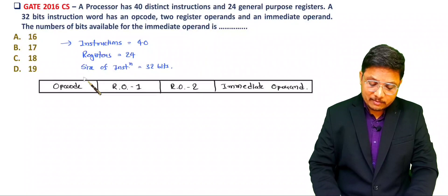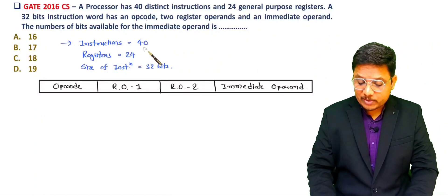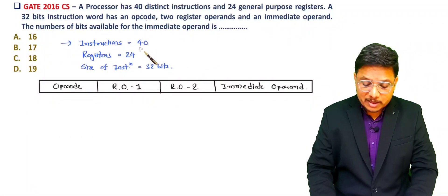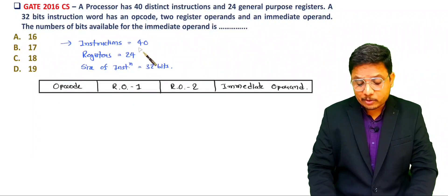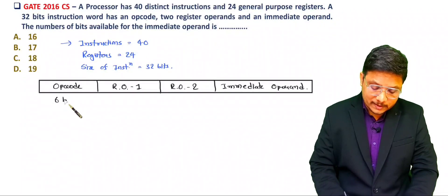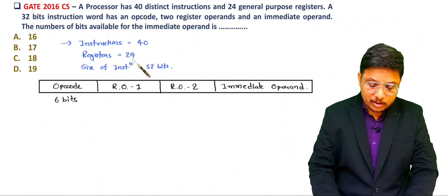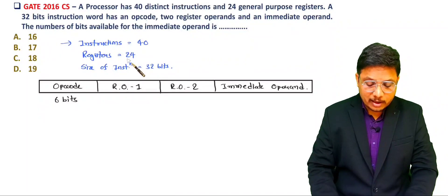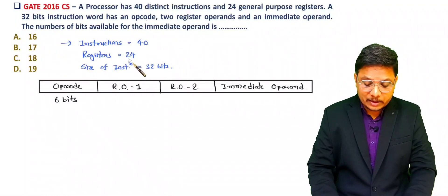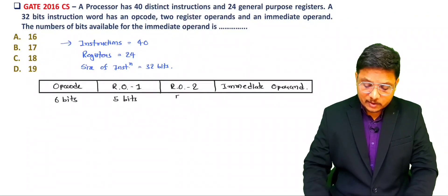Based on the given data we can identify the bit sizes. There are 40 instructions: for 32 you need 5 bits and for 64 you need 6 bits, so from 33 to 64 you need 6 bits — the opcode needs 6 bits. There are 24 registers: for 16 you need 4 bits, and from 17 to 32 you need 5 bits — so each register operand needs 5 bits.